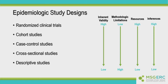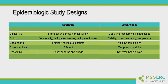Randomized clinical trials have very few methodological limitations, at least in general. The downside is that the resources to conduct these studies are extremely high, and this has been mentioned many times this morning. But the inferences that we can make from these study designs are quite extensive. As we go down that list, through cohort studies, case control studies, cross-sectional studies, and descriptive studies, while they become easier to do, they become much less inferential — we can do less with them. But that doesn't mean they're not valuable.